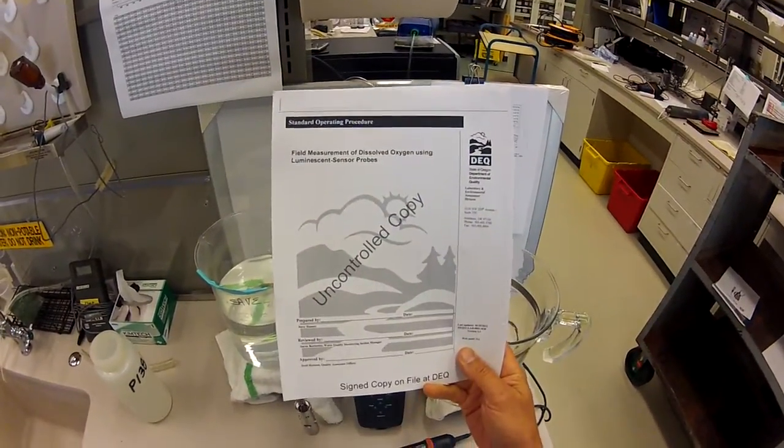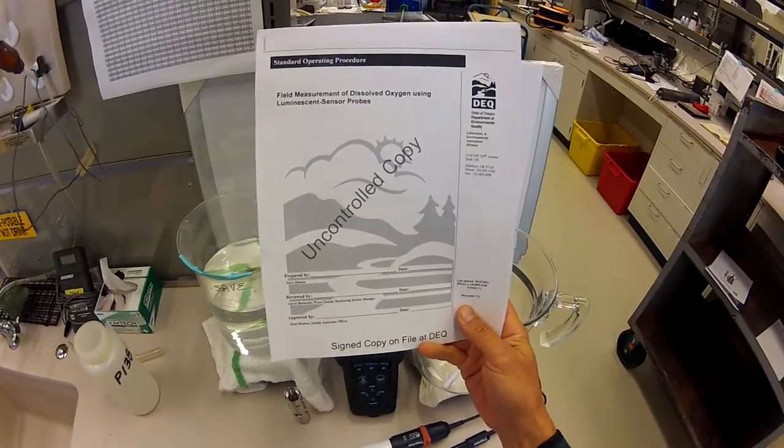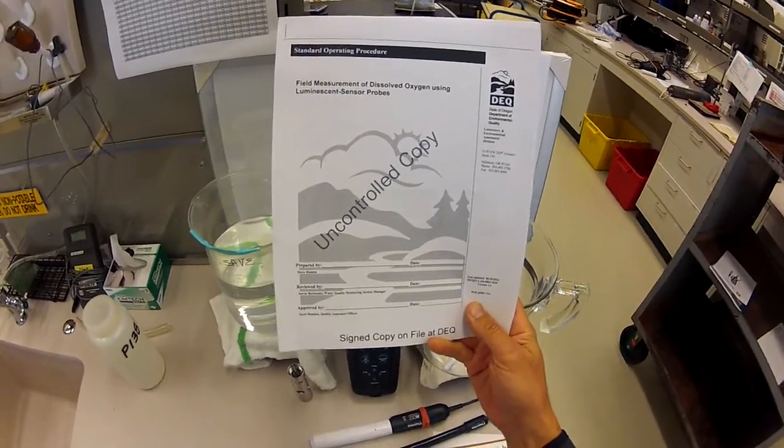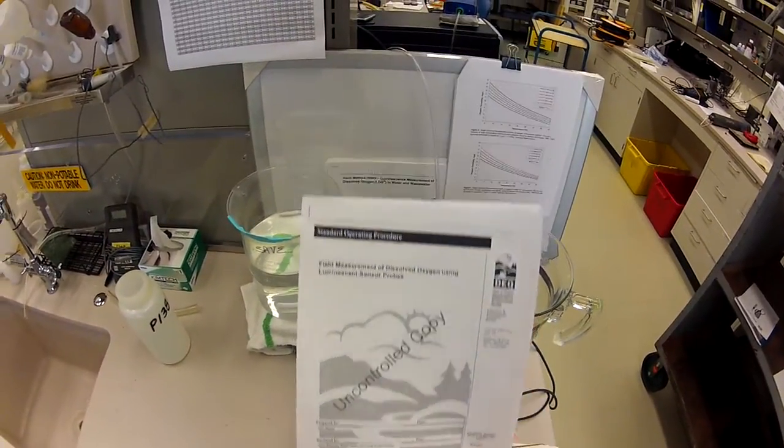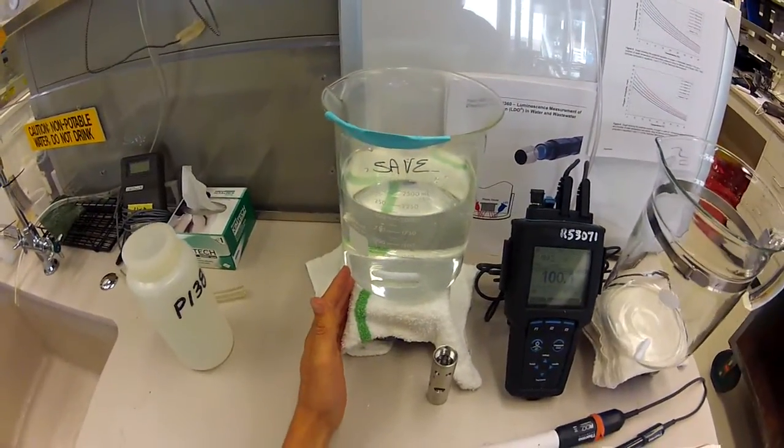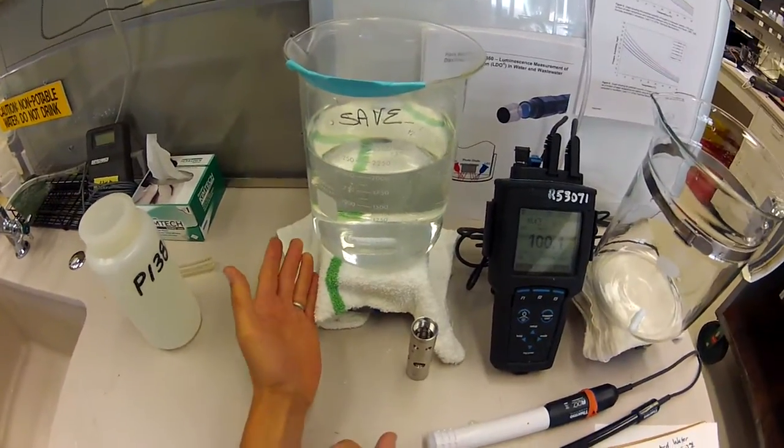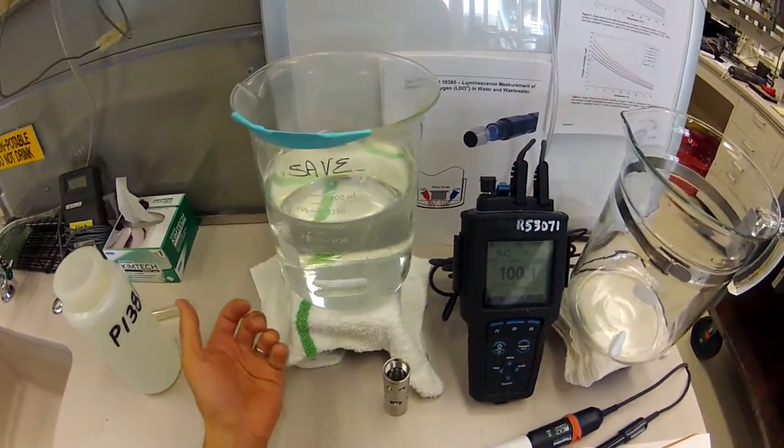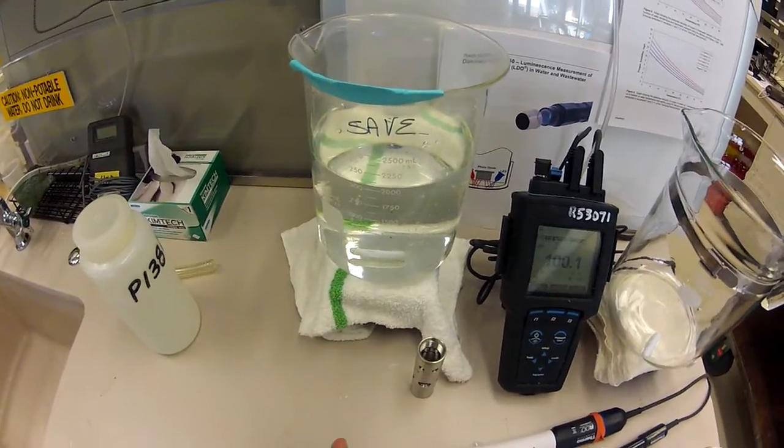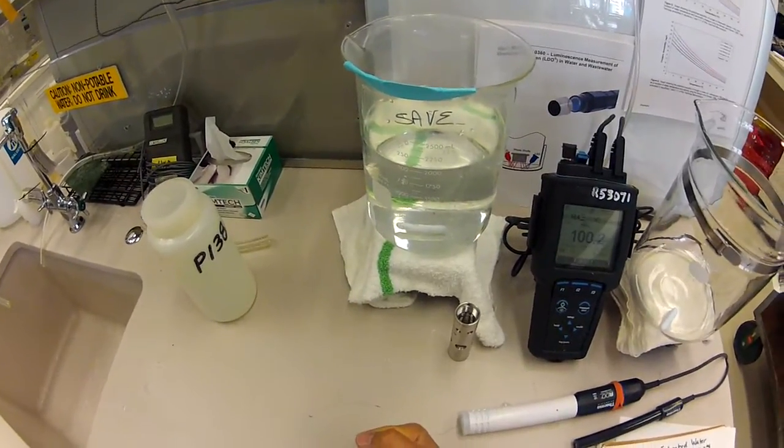I'm going to be following the standard operating procedures from the Oregon Department of Environmental Quality Labs for these types of probes. We're going to use this standard to verify calibration. It's essentially an accuracy check that you want to do before and after doing field measurements to document that calibration has stayed true over the course of a sampling period.